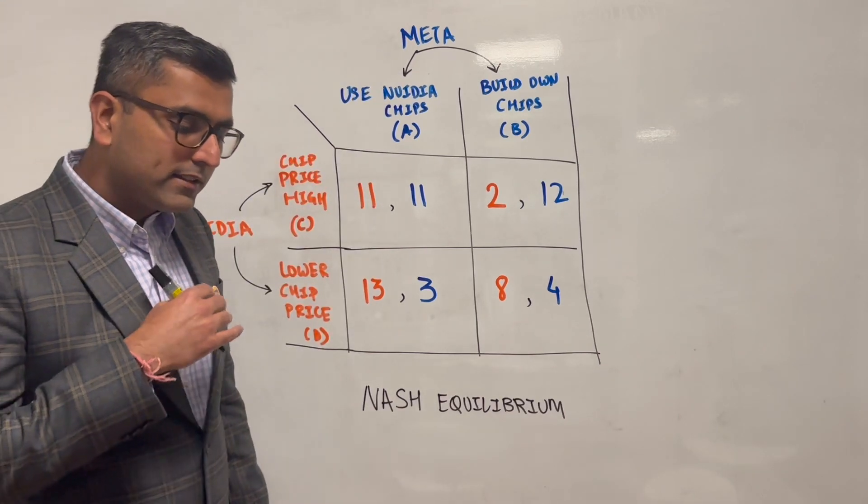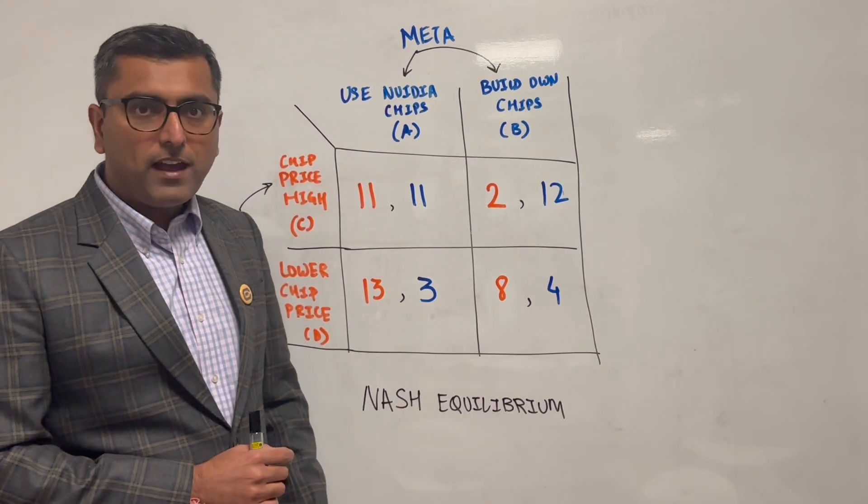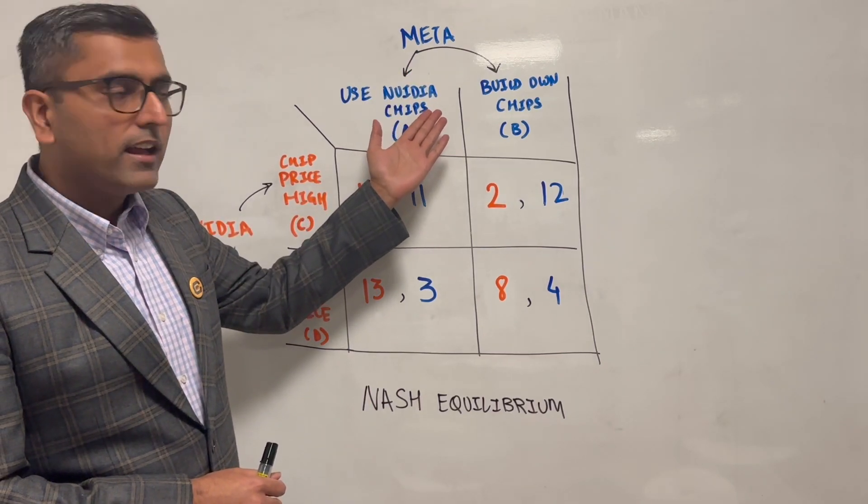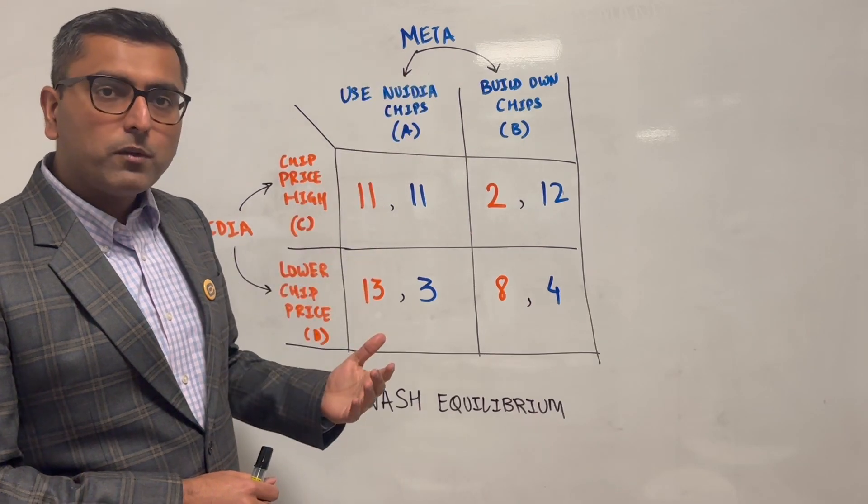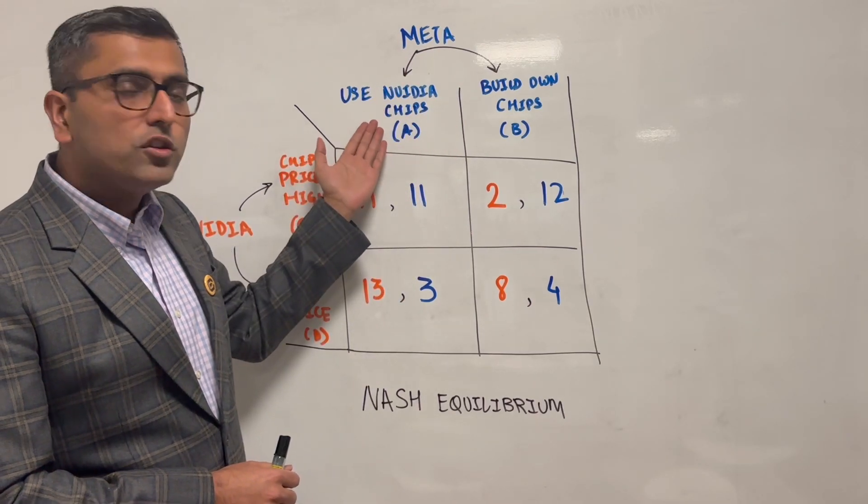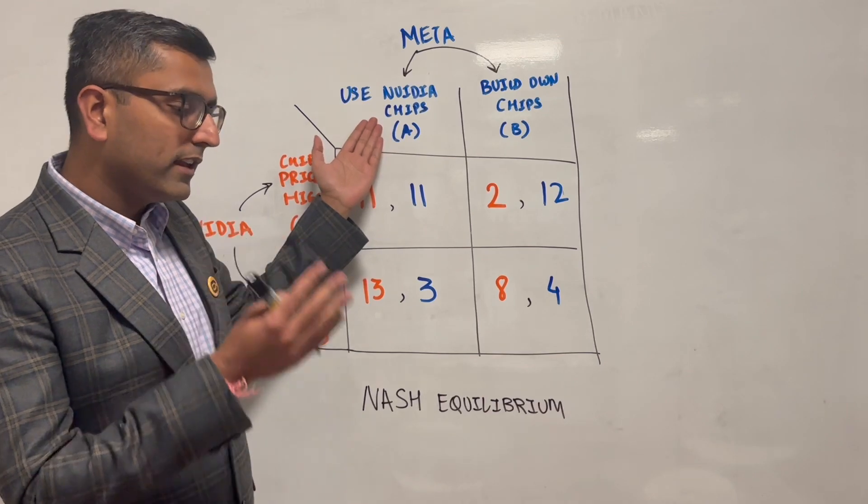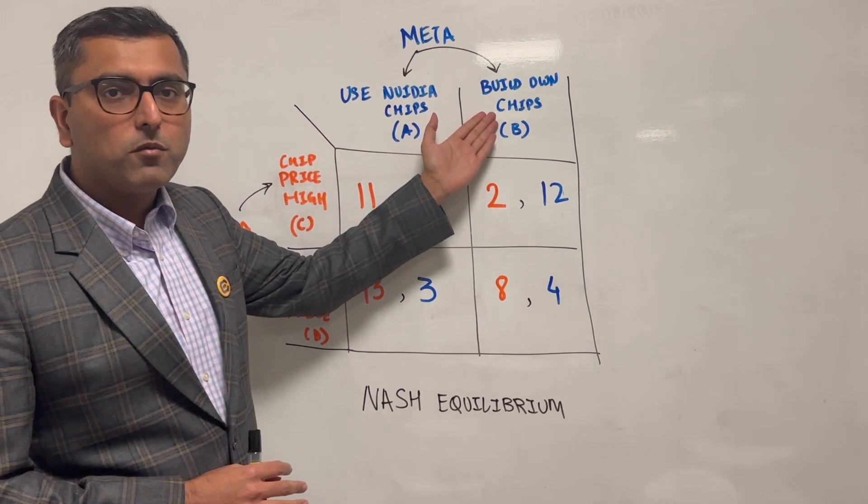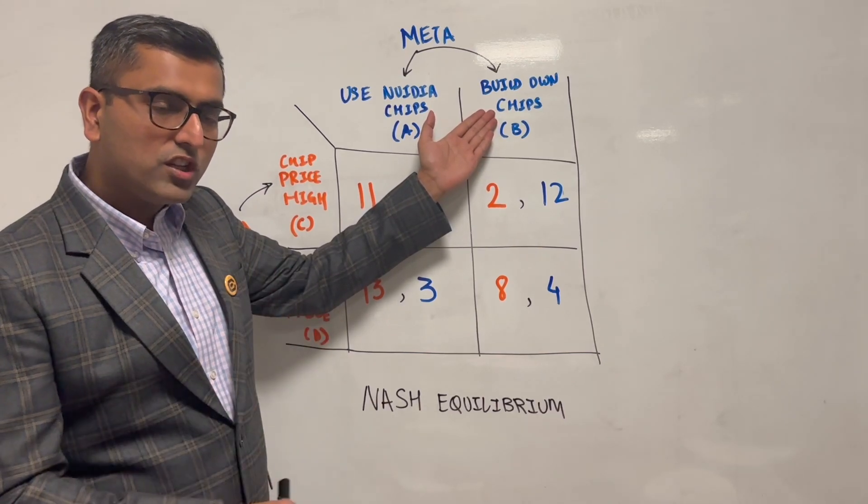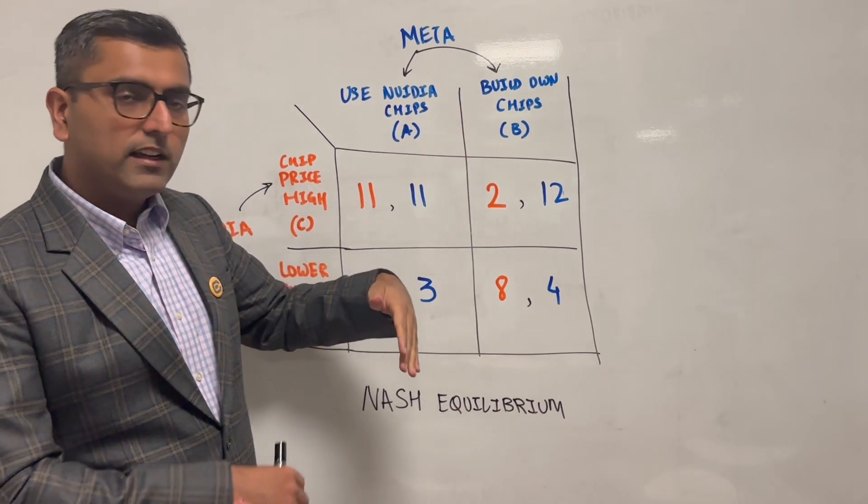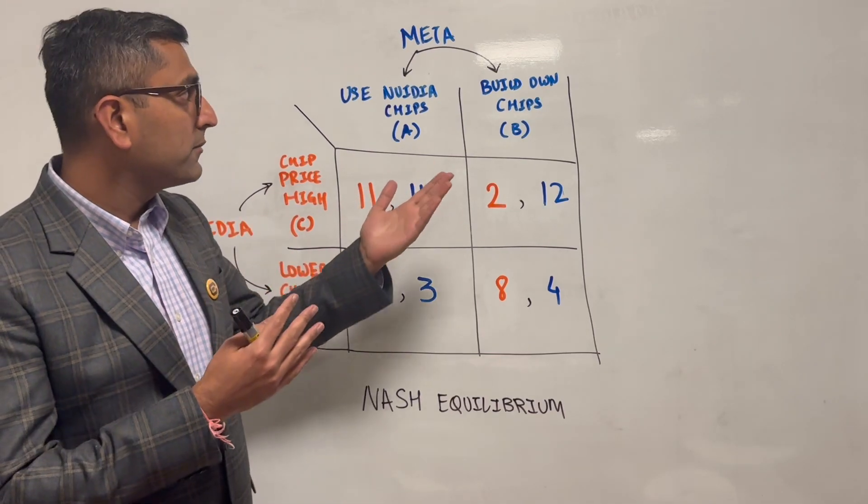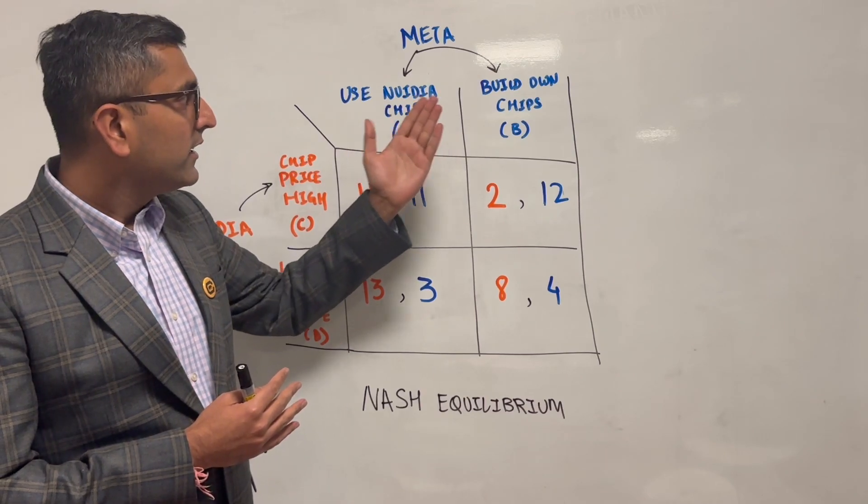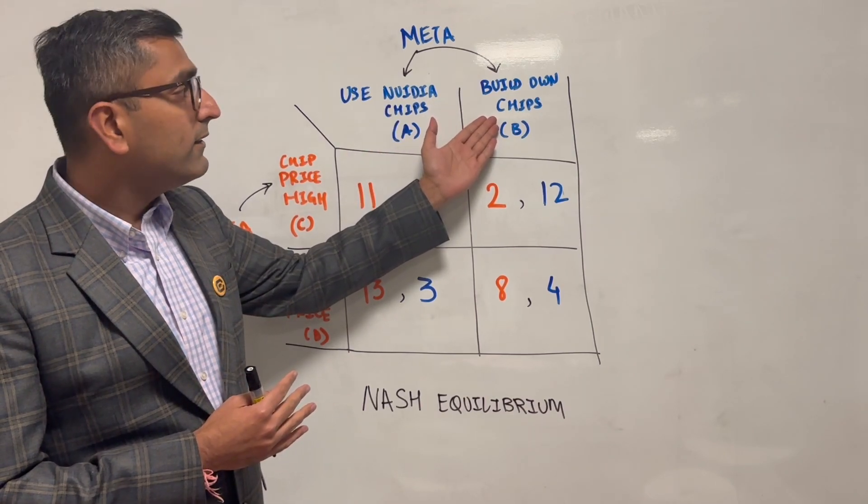Meta realizes that to power its boom of AI it needs heavy computation and so it needs Nvidia chips. They're wondering whether they should continue to use Nvidia chips to power all of the AI algorithms that they have, or should they invest more and build their own chip for powering their data centers and their computer algorithms.